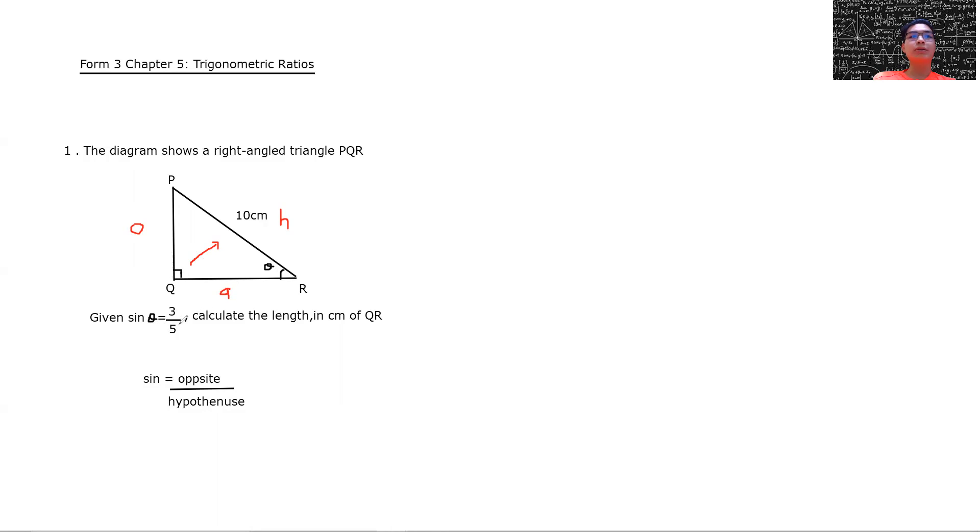So sin theta equal 3 over 5. You know sin is equal to opposite over hypotenuse. Therefore, here is 3 over 5. Okay, so opposite is 3, hypotenuse is 5.